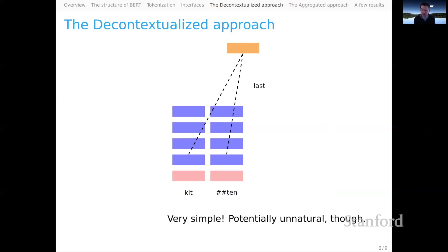This is really simple, but it's potentially unnatural. BERT is a contextual model — it was trained on full sequences — and especially if we leave off the class and SEP tokens, we might be feeding in sequences that BERT has really never seen before, so it might be unknown how it will behave with these unusual inputs. Nonetheless, we could repeat this process for all the words in our vocabulary and derive a static embedding space, and maybe it has some promise.